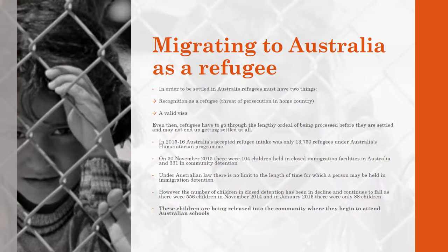On 30 November 2015, there were 104 children held in closed immigration facilities in Australia and 331 in community detention. The difference is that closed immigration facilities are essentially detention centres where refugees are confined and isolated from the rest of Australian society, whereas in community detention centres, refugees get to interact with the community and children are allowed to go to school where they get the opportunity to learn.